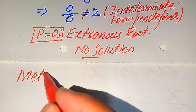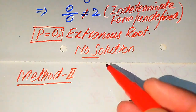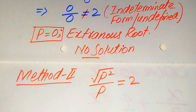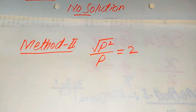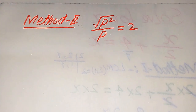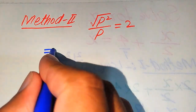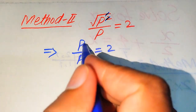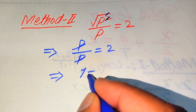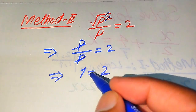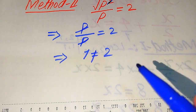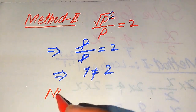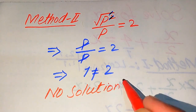Now we move to the second method. The given equation is: √(p²) / p = 2. In the second method, we focus on the left-hand side directly. The square root and the square cancel, giving p / p = 2. Then p cancels with p, leaving 1 = 2. Since 1 is not equal to 2 in general, we cannot get any value of p, meaning this question has no solution.